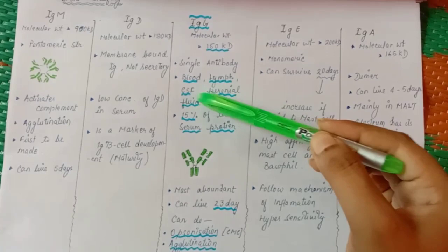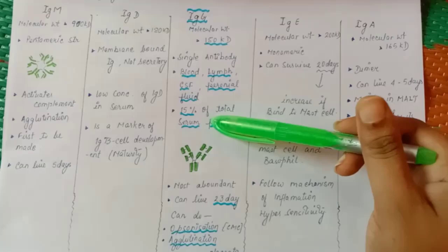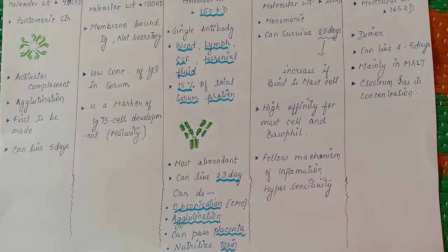It is 50% of total serum protein. Half-life, or we can say, can live up to 23 days. It can participate in opsonization and agglutination.